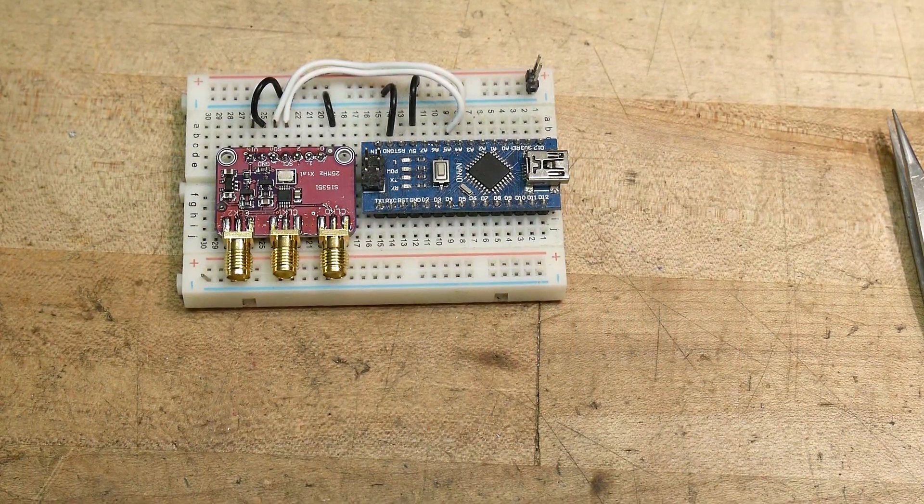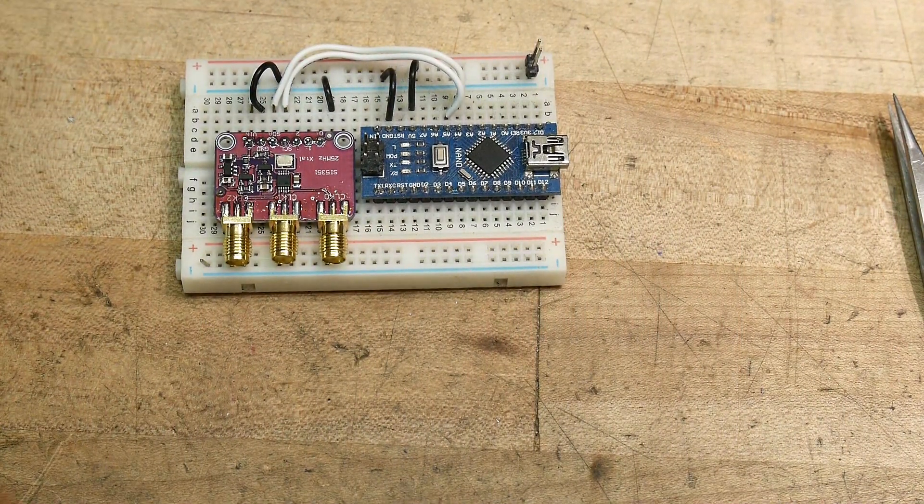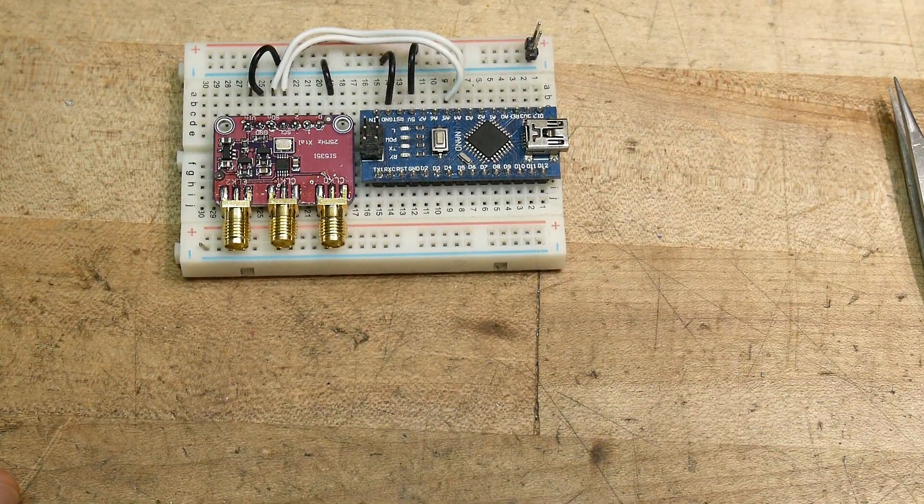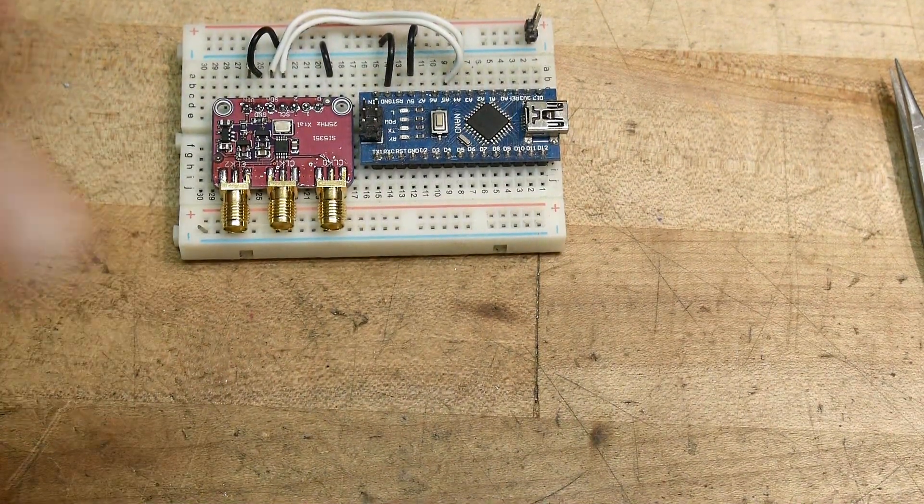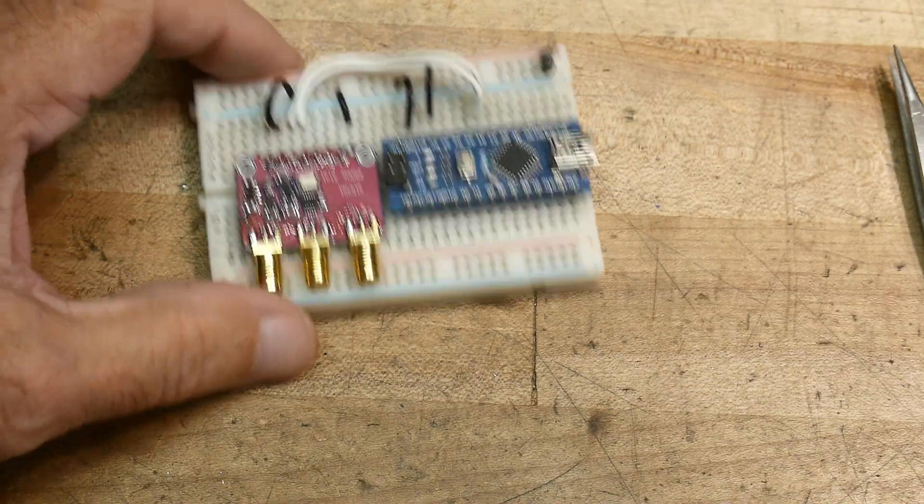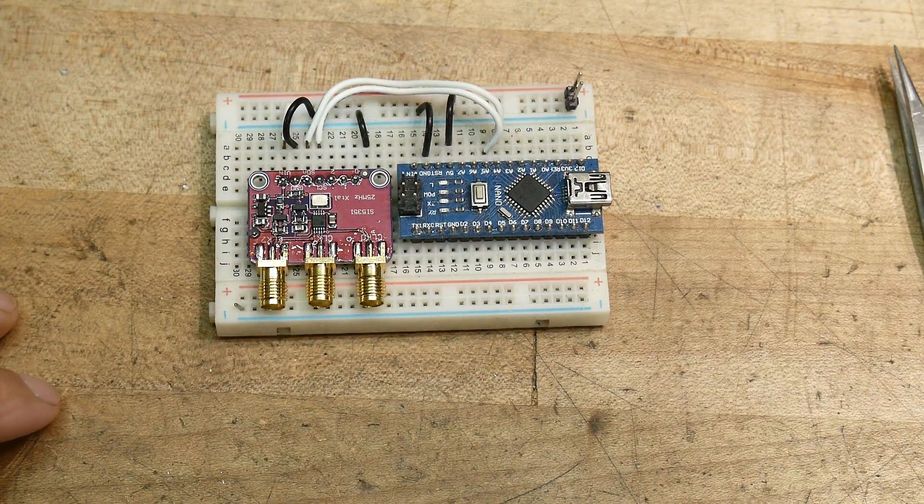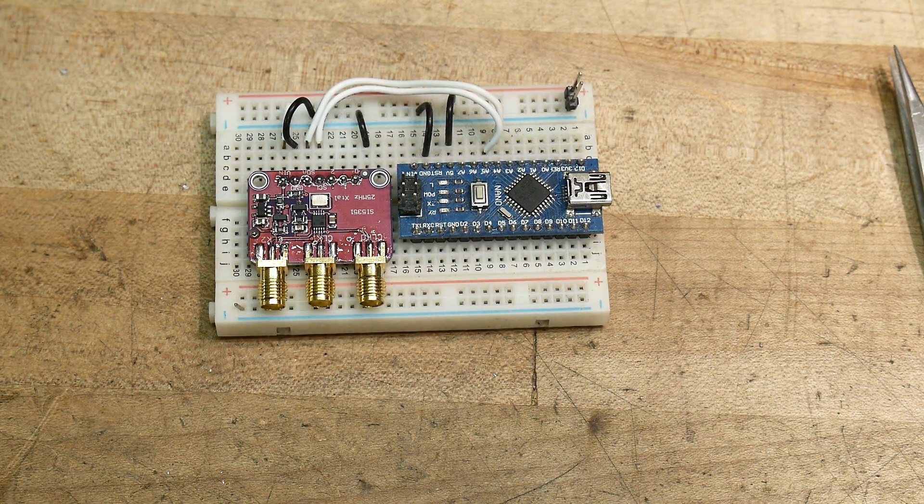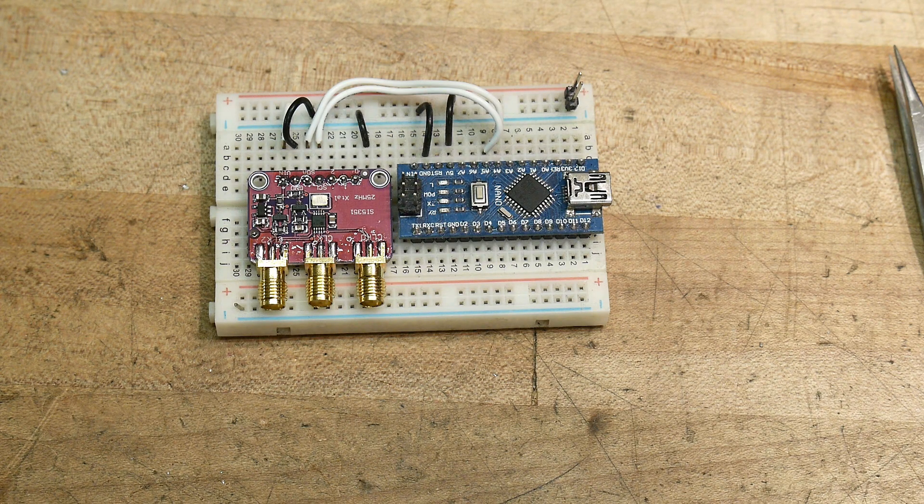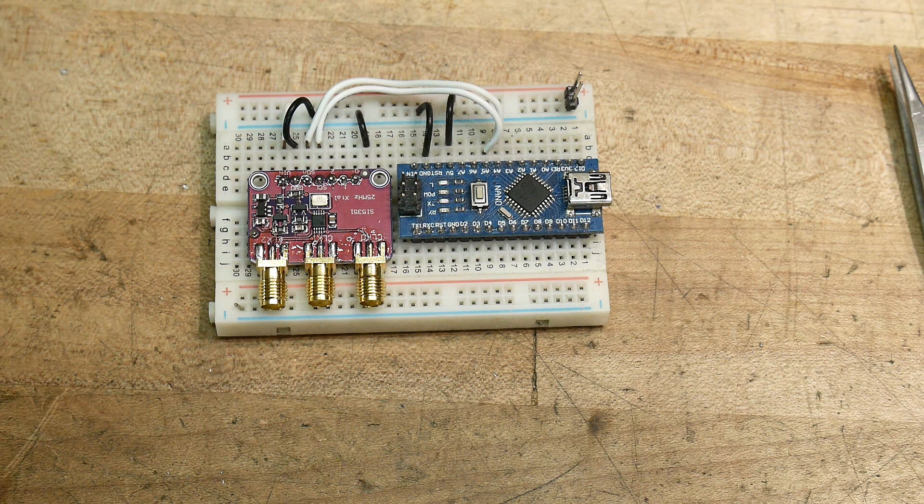Alright, I know a lot of my viewers are going to be saying, why are you wasting time on that VCO thing? Why don't you just put in a digital synthesis chip or some other type of circuit to generate your own clock? And that's a good idea, and I had thought of that, and I wanted to try the other one first.